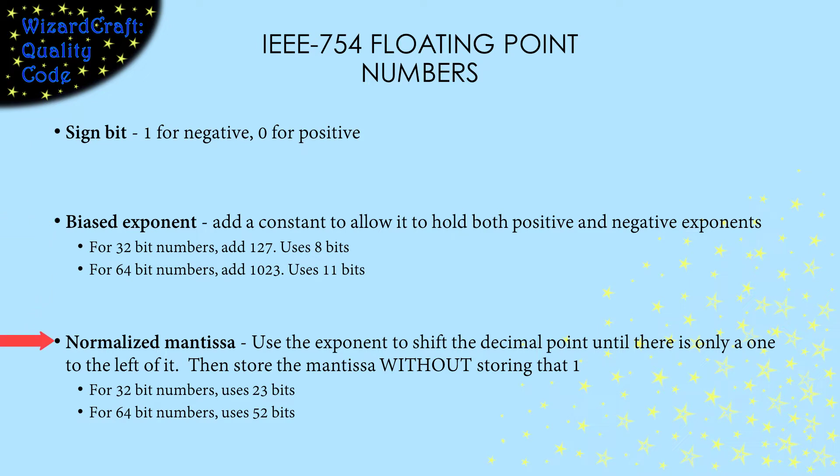The last part we have to store is the mantissa. The rule in IEEE 754 floating point numbers is that we shift the decimal point until there is exactly a single one to the left of it. Then, since we know that bit is a 1, we only store the bits to the right of the decimal point. This is called the normalized mantissa. The number of bits given to the mantissa also varies by the size of the floating point representation.